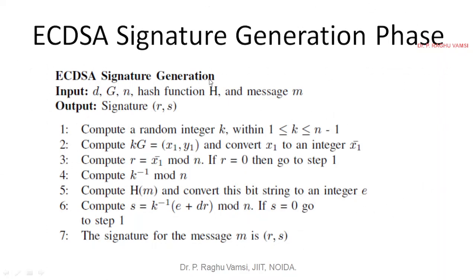ECDSA signature generation requires the group G that you are going to operate on, this is the finite group for generating the keys. D value, n is the prime number, hash function, for example you may take SHA256, and a message m which you want to encrypt.